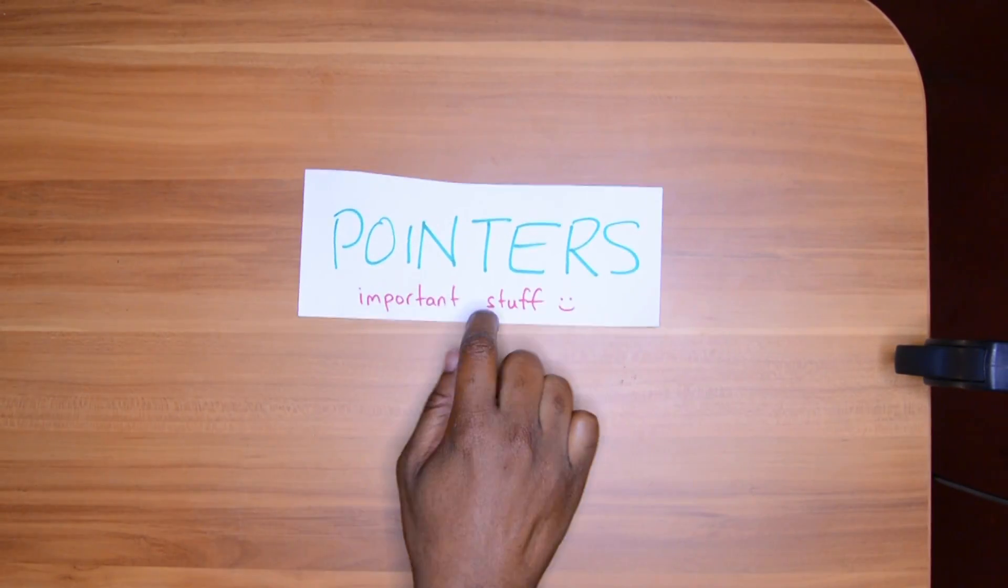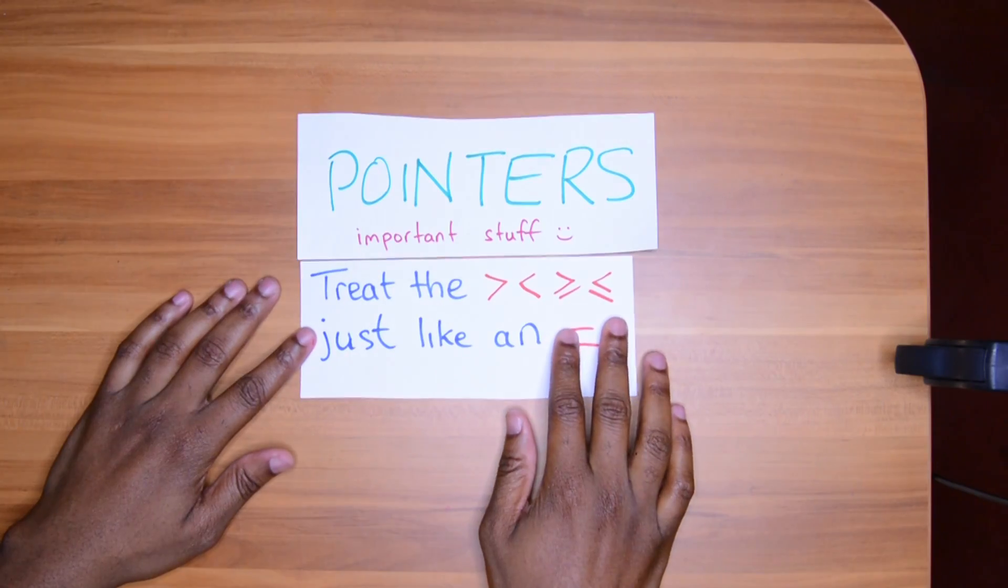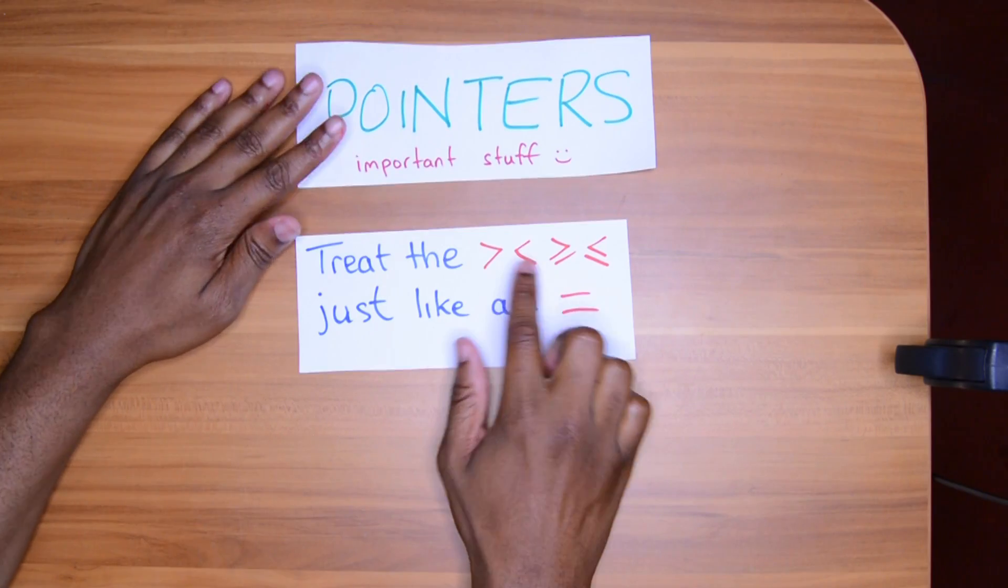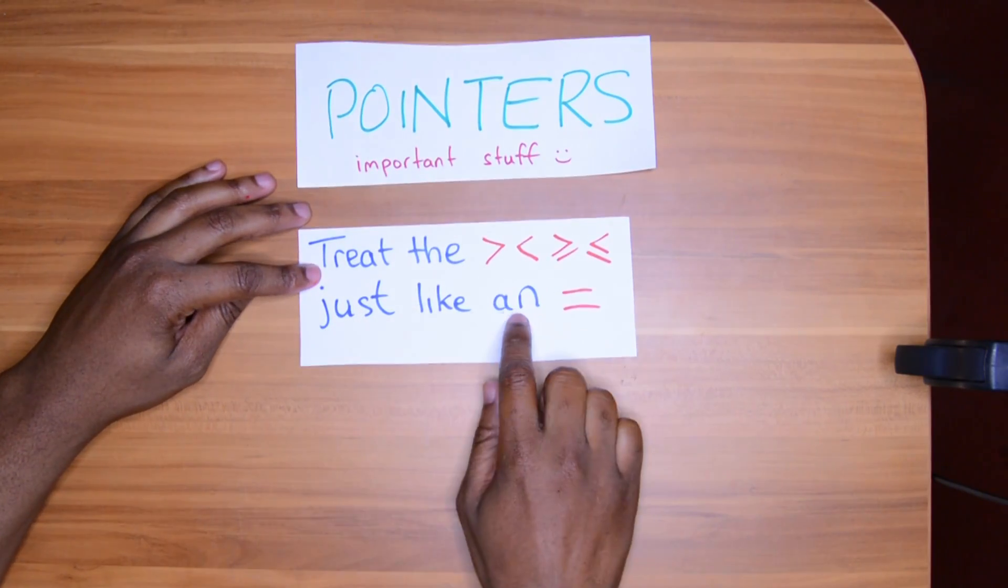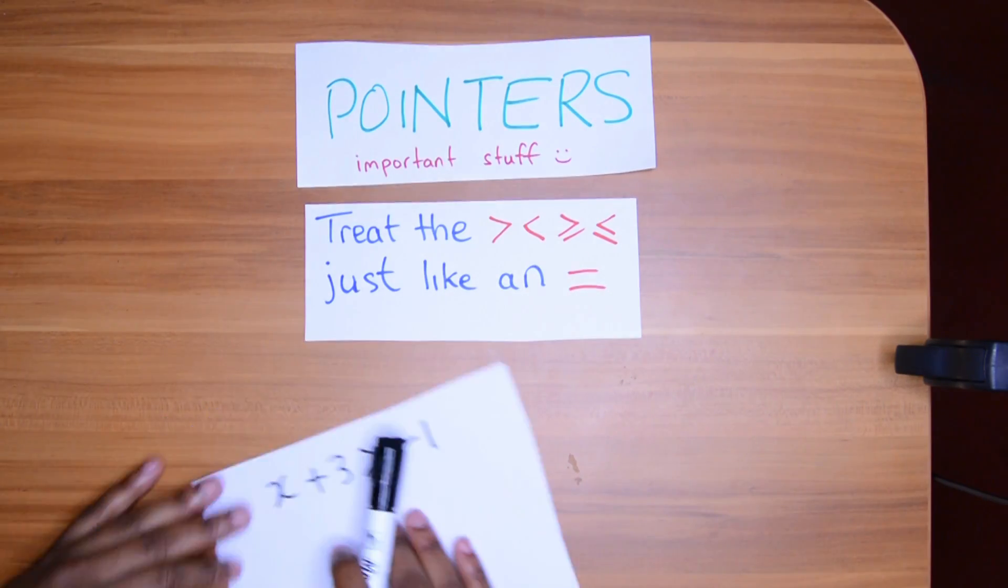So you know I must hit you the pointer, the important stuff. I just have two pointers for you today. Pointer number one, treat the inequality sign just like an equal sign. So you don't need to worry too much about the inequalities. It just looks like a normal equation. Let's check it out in an example.